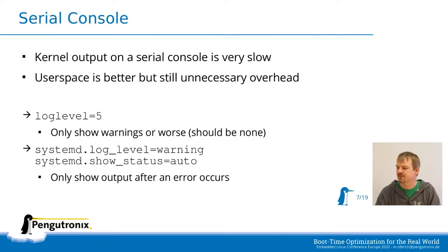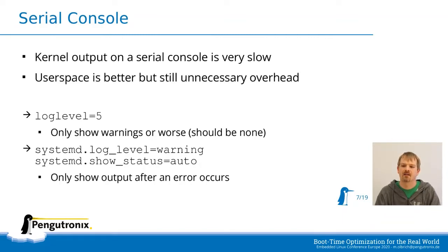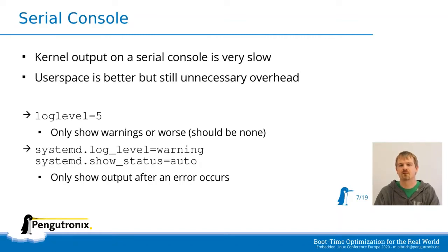Let's get to some real things. The serial console: output on the serial console, especially from the kernel, is very slow and can easily add a few hundred milliseconds. But instead of using 'quiet' — which disables all errors too — there is log_level=5, which means we only show warnings and worse. In a final product there should be no warnings, so we have no output until an error occurs. This is a setting we can keep during development because errors are still visible. The same applies for user space startup — systemd has the option systemd.log_level=warning.